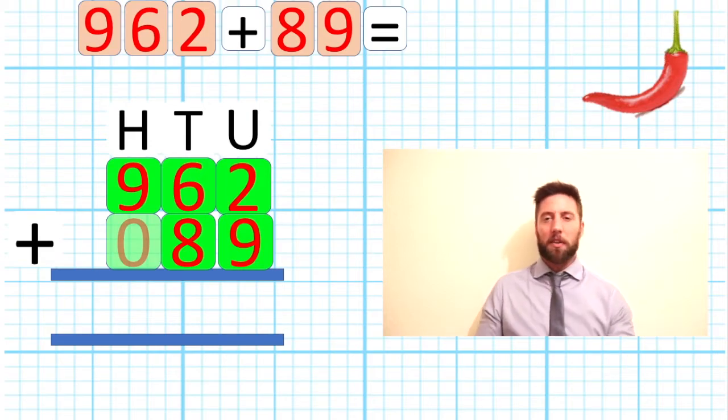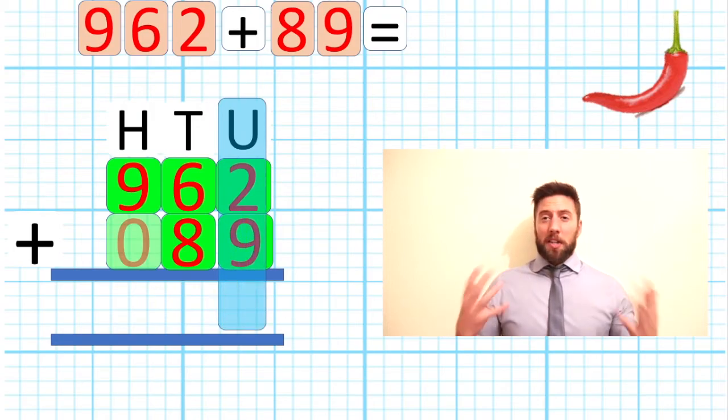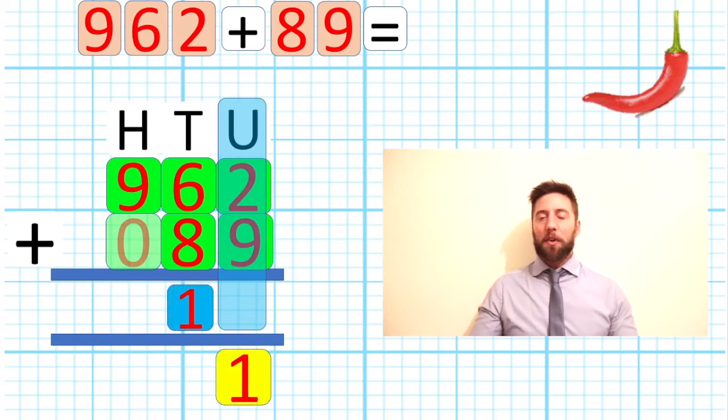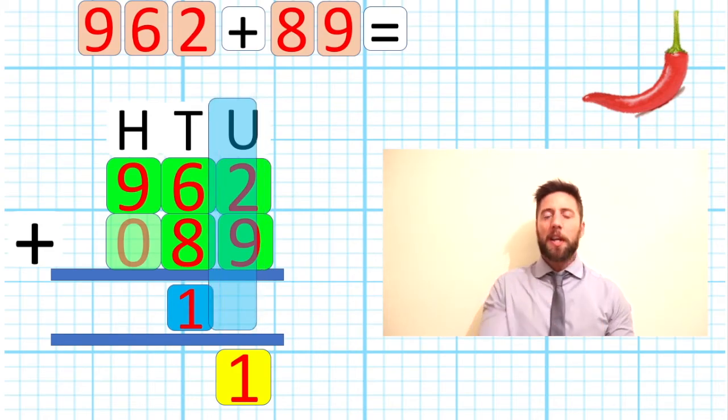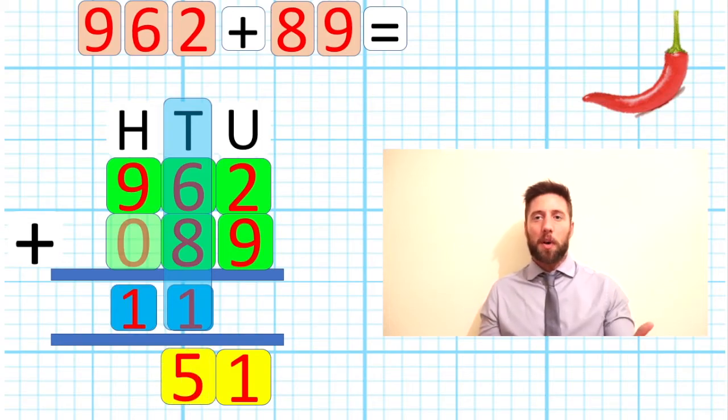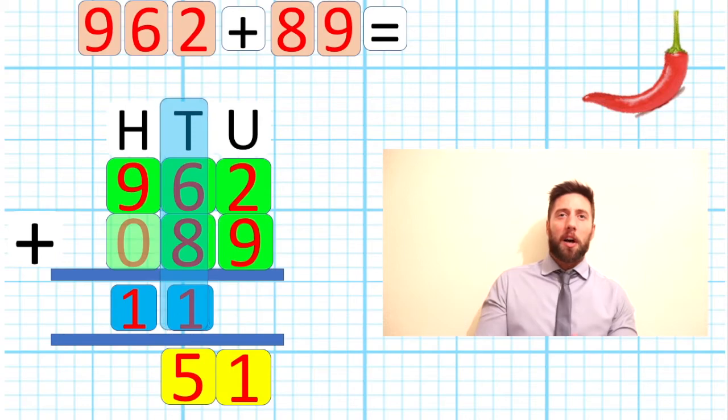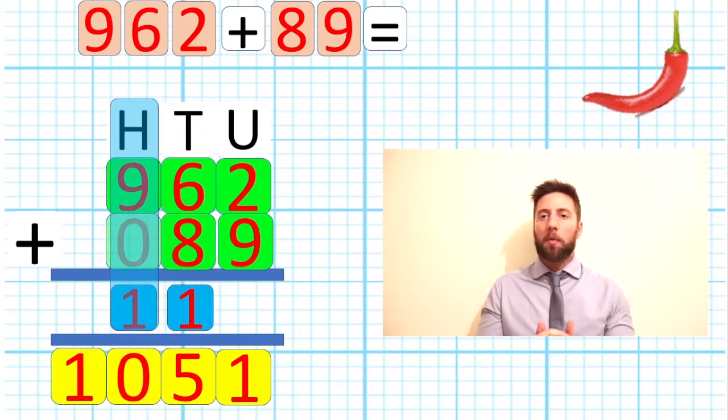Okay, let's start again. Same as before, we're gonna start our units column. Two add nine is 11, one unit, one ten waiting for us for that next question. Tens column, six and eight plus this one equals 15. Remember, five in our tens column, one now goes into our hundreds column. Looking at our hundreds column, I've got nine and a one, nine and one equals ten. I've got no further questions to ask, so we just write the ten straight in there: one, zero, five, one. One thousand and fifty-one.